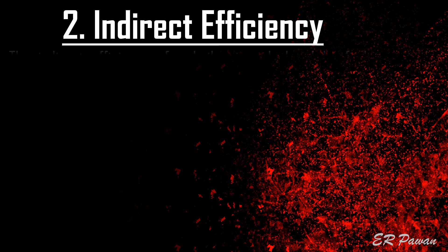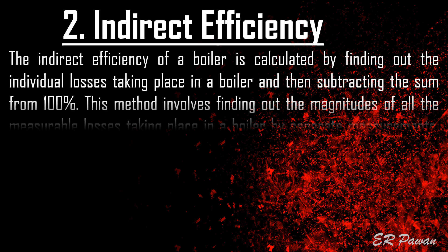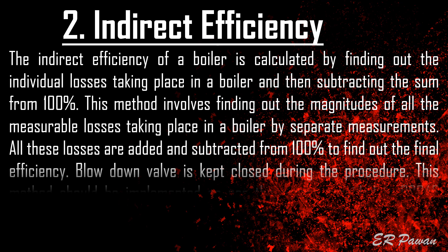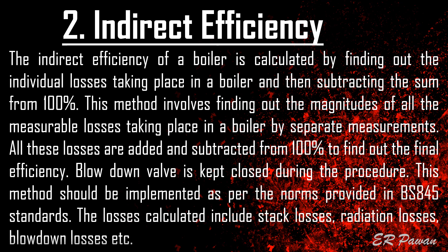Indirect efficiency of a boiler is calculated by finding out the individual losses taking place in a boiler and then subtracting their sum from 100%. This method involves finding out the magnitudes of all measurable losses by separate measurements, adding all these losses, and subtracting from 100% to find the final efficiency. The blow down valve is kept closed during the procedure. This method should be implemented as per the norms provided in BS 845 standards. The losses calculated include stack losses, radiation losses, blow down losses, and others.